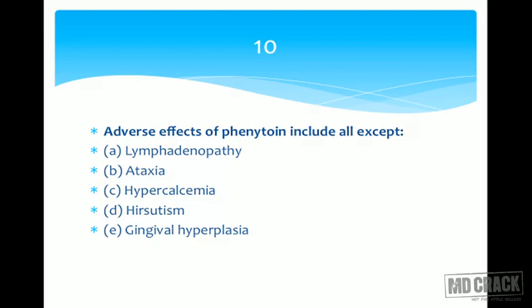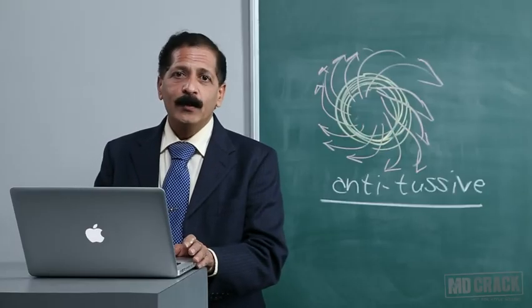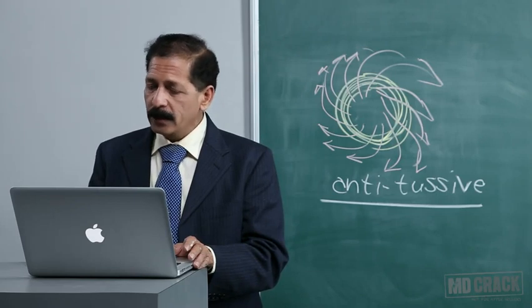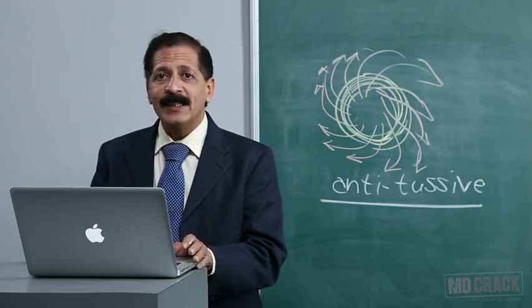Gingival hyperplasia is a well-confirmed adverse effect of phenytoin. We paused at hypercalcemia because phenytoin is not known to produce hypercalcemia. The answer is hypercalcemia — that is the one that is NOT an adverse effect of phenytoin. All the rest — lymphadenopathy, ataxia, hirsutism, and gingival hyperplasia — are known adverse effects of phenytoin. That concludes this session of 10 questions. Good luck!